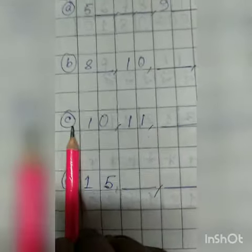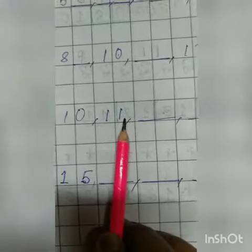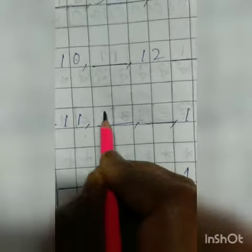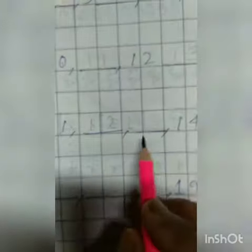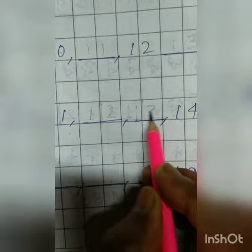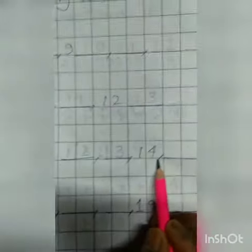Next one is C: 10, 11, 12 is missing, you have to write 12. Now 13, 13 is also missing, you have to write 13. 14 is here, you don't have to write 14. After 14 it's 15, okay.